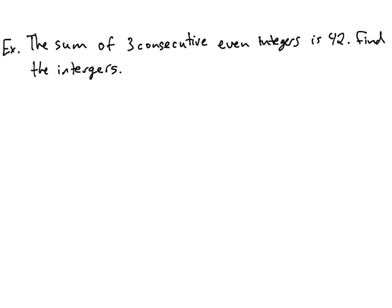The last two examples are word problems. This one says the sum of three consecutive even integers is 42 — find the integers. Sum means addition, so three things add together to equal 42, and those three things are consecutive even integers. An integer is any positive or negative whole number: ..., negative 3, negative 2, negative 1, 0, 1, 2, 3, and so on.